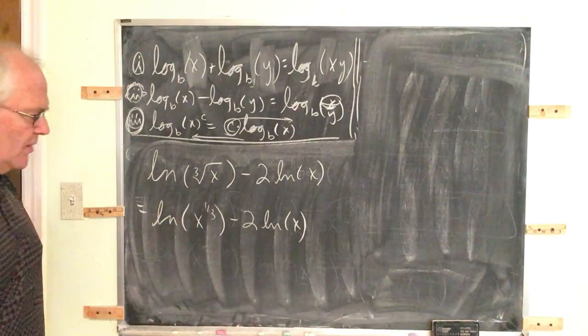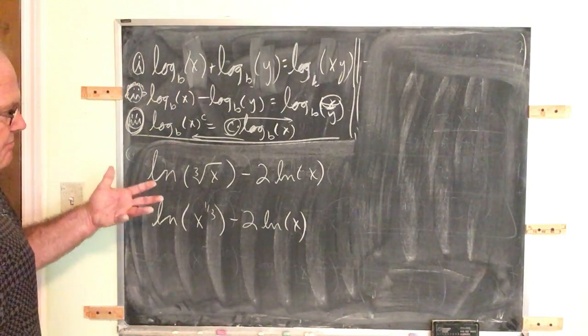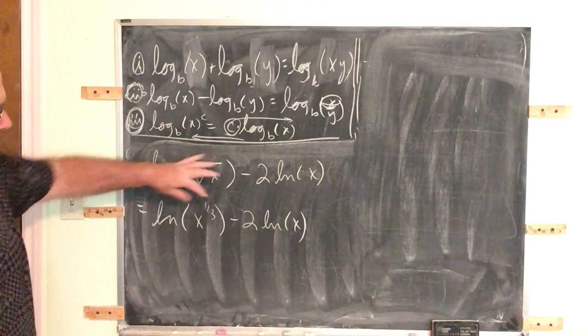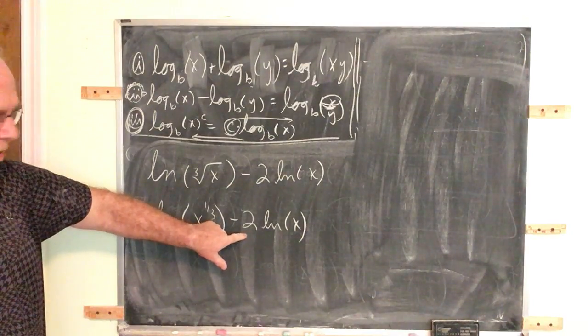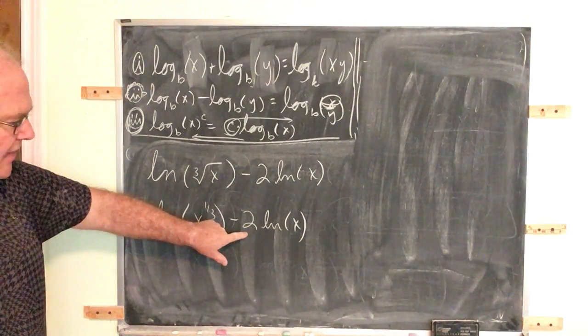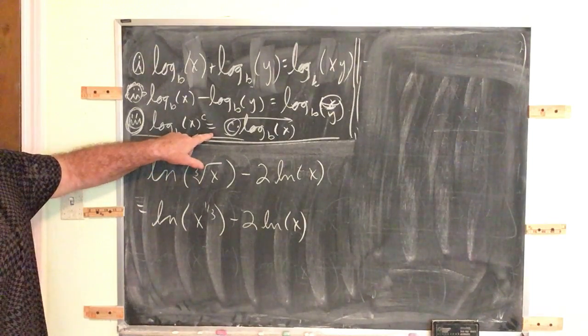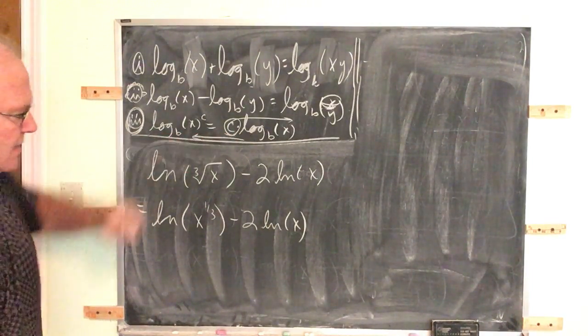And now we're off to the races because now we're on the same procedure as before. We want to try to combine these using property two. The problem is this coefficient's in the way. Well, now we know how to handle that. If there's a coefficient in the way, you get rid of it using property three, actually going from right to left.